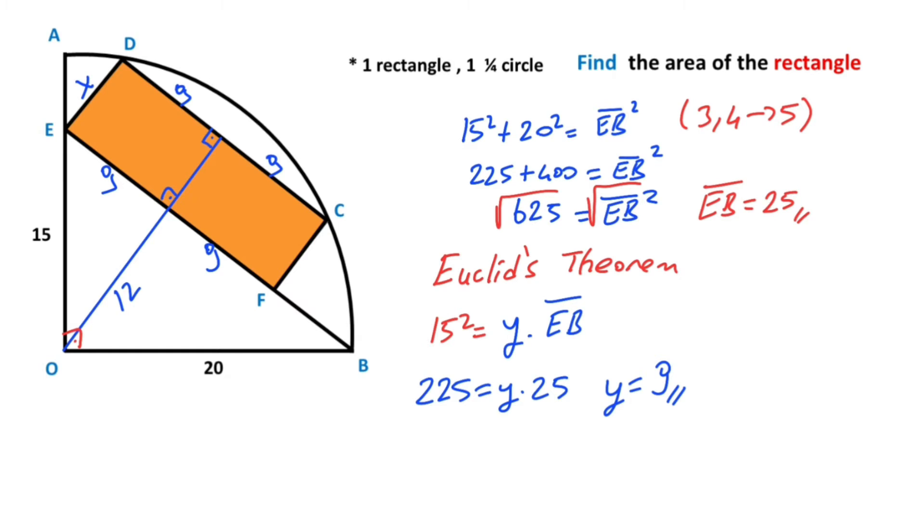So let's call here x. Then if we connect these two points, this length is also radius. Notice that the radius of the circle is given as 20.